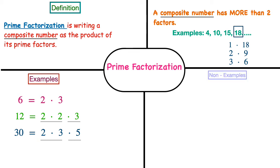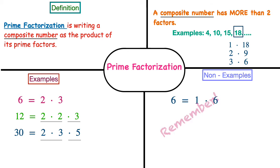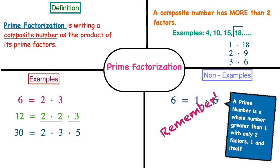Now let's take a look at some non-examples. I'm going to use the same problems but not write them in prime factorization form, so you can see the difference. I'm going to take 6 and write it as 1 times 6. This is not prime factorization because both factors have to be prime numbers, and 1 is not a prime number — neither is 6, since a prime number is a whole number greater than 1 with only two factors: 1 and itself.